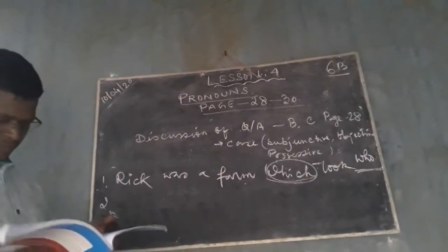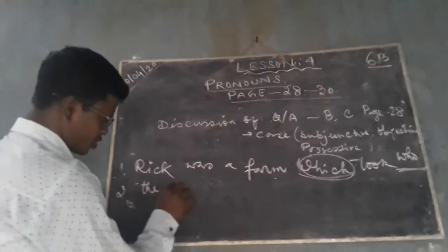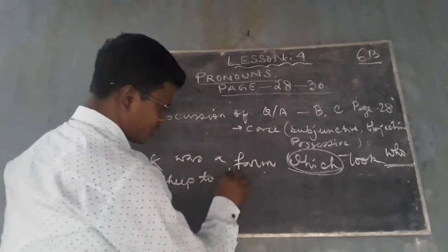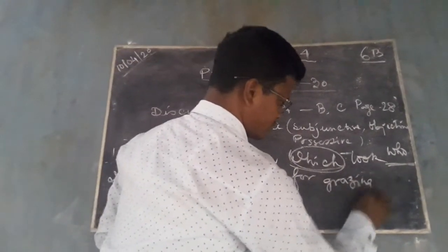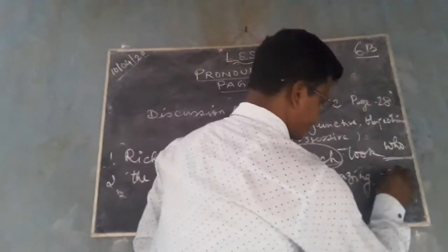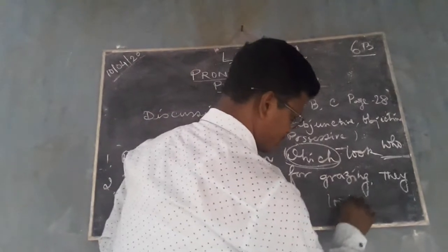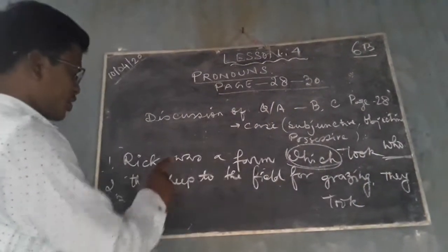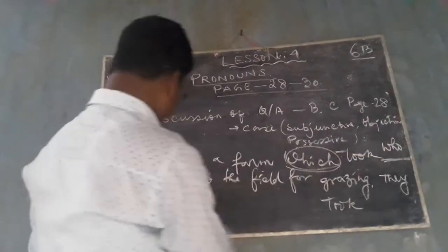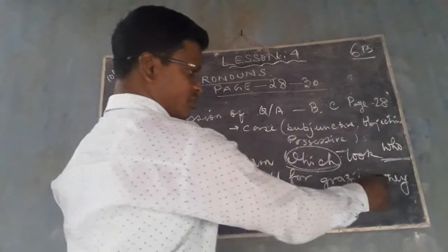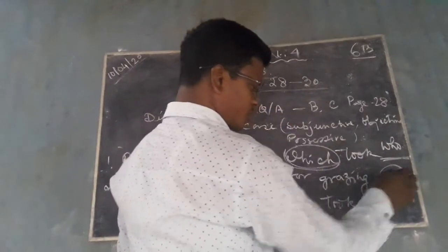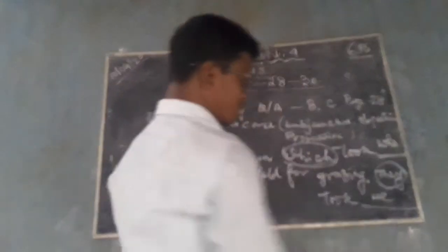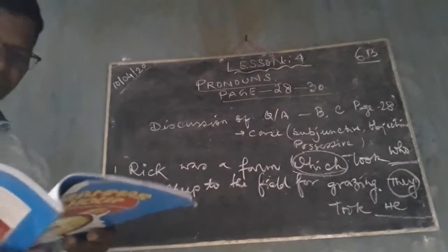The second one: 'They took the sheave to the field for grazing.' Here 'they' is written, but that is the wrong pronoun. What will be the correct one? 'He.' So this is the wrong one and 'he' is the correct one.